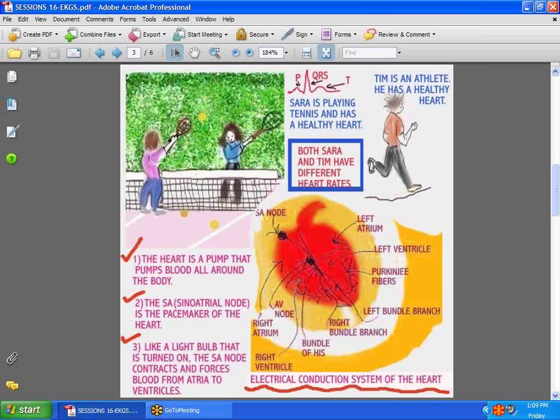Like in the case of this girl you can see she's playing tennis, she has no heart problems. Here is this young guy Tim, he's running, he has no heart problems. Take a look at the P, the QRS, and the T, because the P means the atria has contracted because the sinoatrial node has fired. The QRS means the ventricles have contracted because the AV node has fired, and then the T means there's a short resting time.